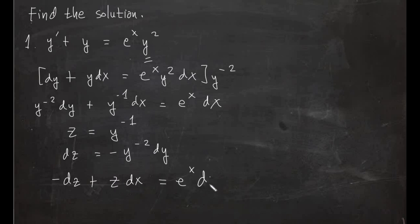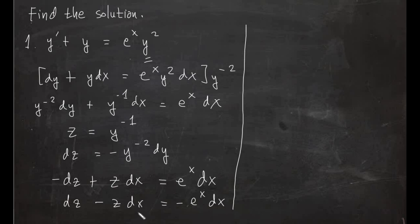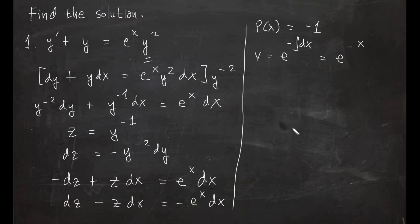After multiplying by negative 1, the equation becomes a linear differential equation in z. In standard linear form, we can see that P(x) is equal to negative 1. Therefore our integrating factor v is equal to e raised to the negative integral of dx, which is e raised to negative x.